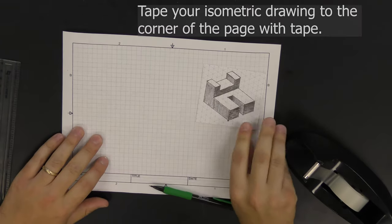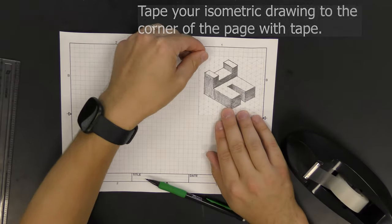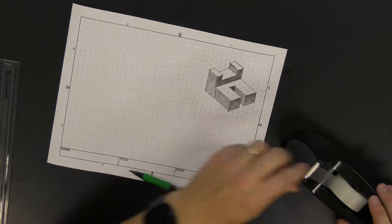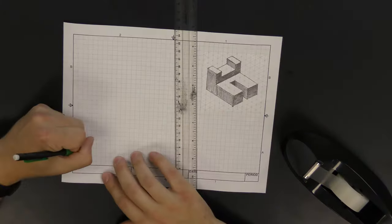When we do multi-view drawings, it's really important to start with our isometric sketch on the paper, and we do that by taping it to the top right corner. Please make sure that you put tape on all four corners of the taped isometric sketch.